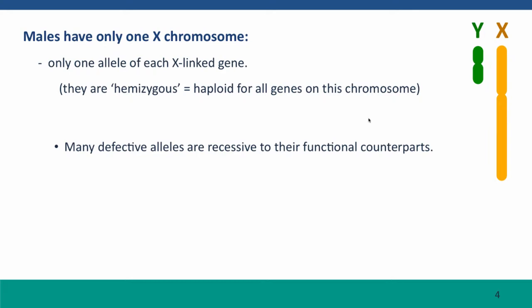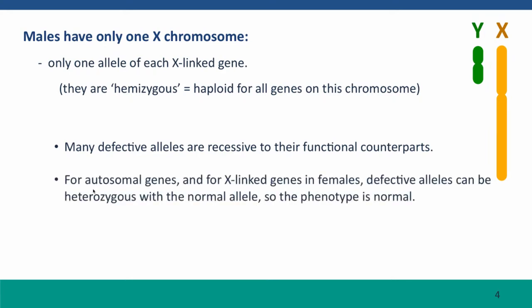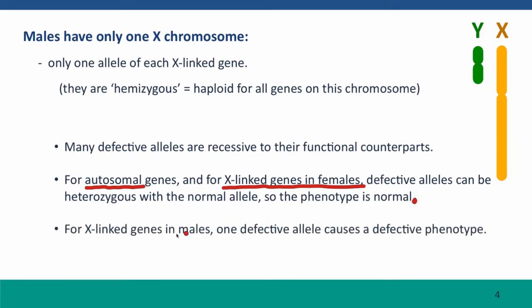From Module 3, we talked about how many defective alleles are recessive to their functional counterparts in diploid cells. This means that for genes on autosomes, or for genes on the X chromosome in females, defective alleles can often be heterozygous with the normal allele and the phenotype will be normal. But in males, for X-linked genes, one defective allele is all you have — so one defective allele always causes a defective phenotype.